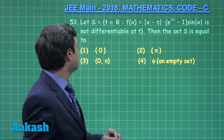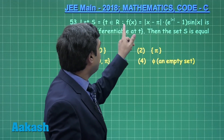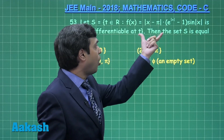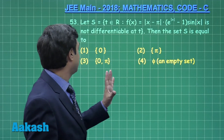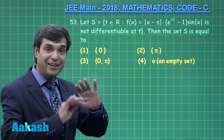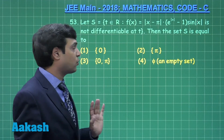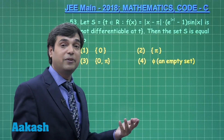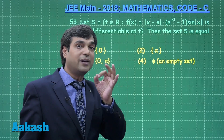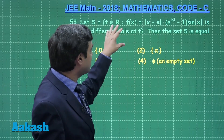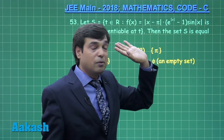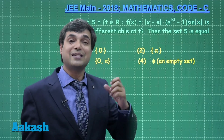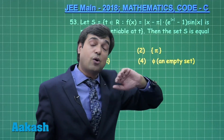Moving to question number 53. The set S is given such that function f(x) = |x − π| · e^(|x| − 1) · sin|x| is not differentiable at points in S. This is a beautiful question. We can solve it by a lengthy method, but looking at the concept: for |x − π|, the zero is x = π; for e^(|x| − 1), the zero is x = 0; and sin|x| also has zeros at x = 0 and x = π.